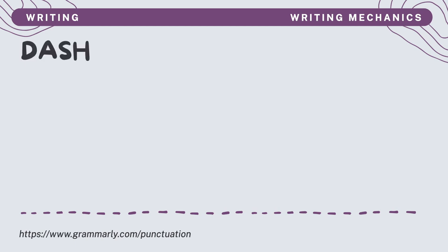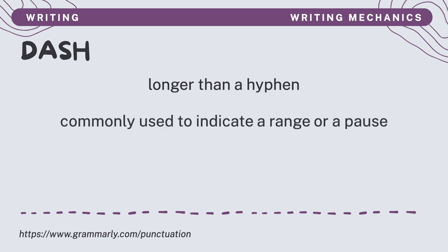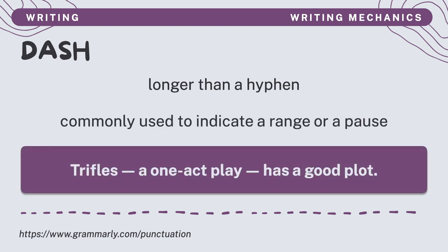The next punctuation is the dash. A dash is longer than a hyphen. It is commonly used to indicate a range or a pause. In this sentence: 'Trifles — a one-act play — has a good plot.' The dash represents a pause between the subject 'Trifles' and its predicate 'has a good plot.'